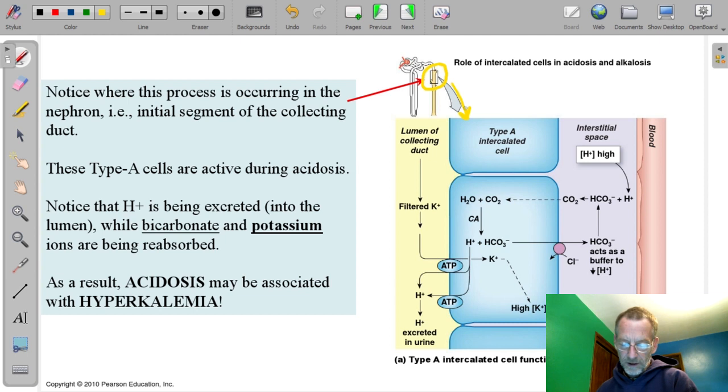Okay, so there are a couple of different cell types in the collecting duct. These are type A cells. After this we'll look at type B cells. They basically do the opposite, but type A cells are relatively active during acidosis. So you can think of the A for acidosis.